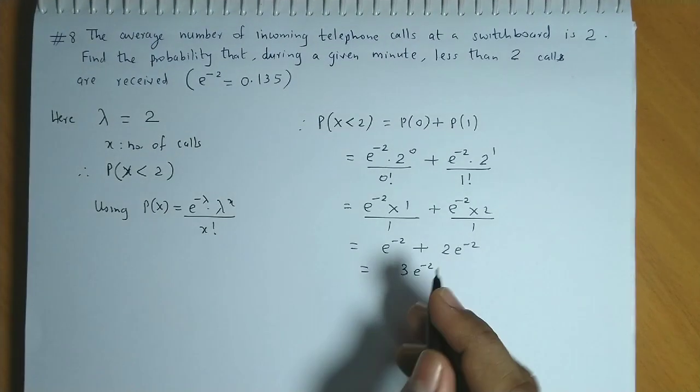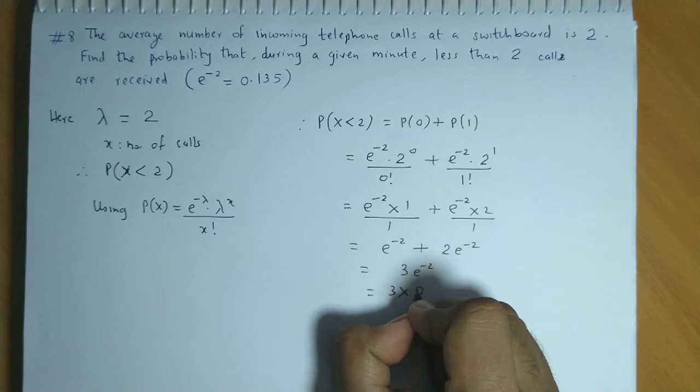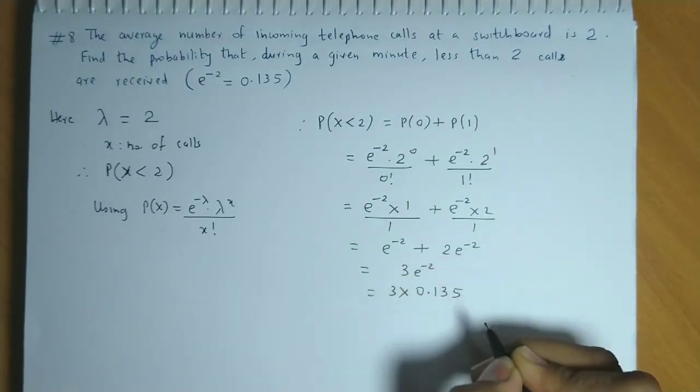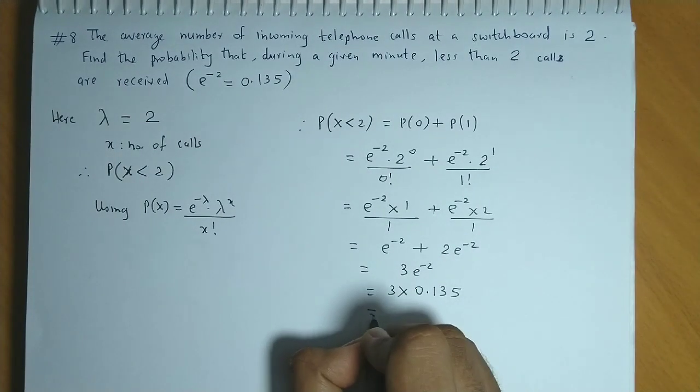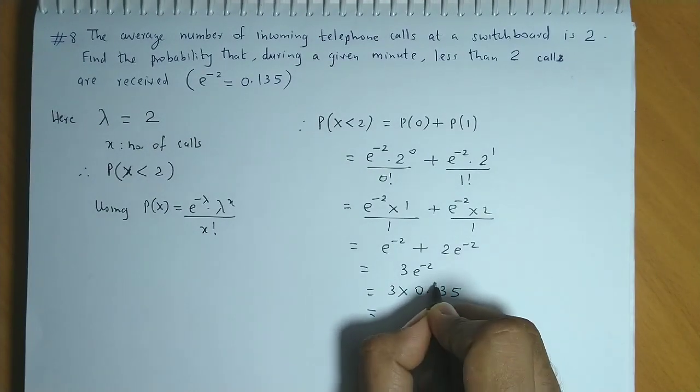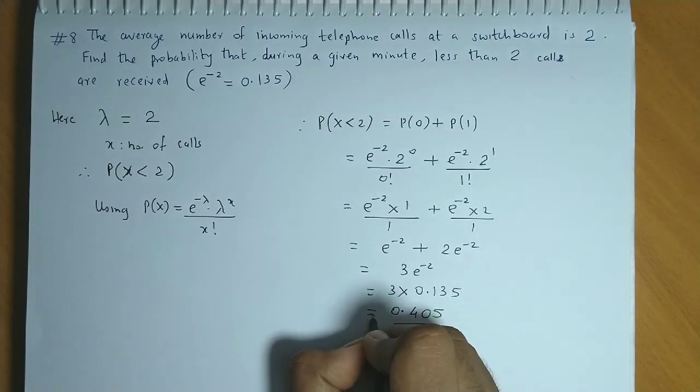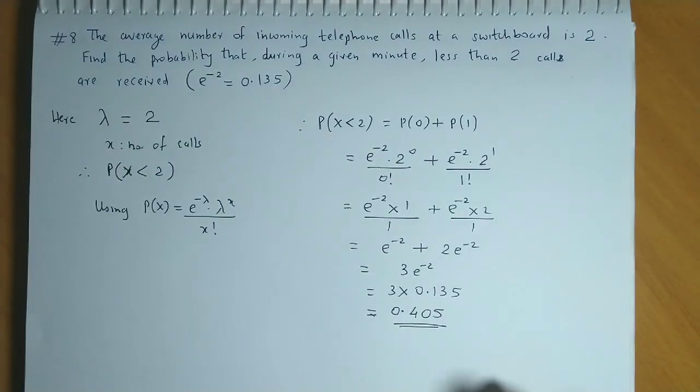Now the value is provided. So we have 3 times 0.135. Now if we multiply this: 5 times 3 is 15, 3 times 3 is 9, and 1, carry 1, we get 4. So the required probability is 0.405.